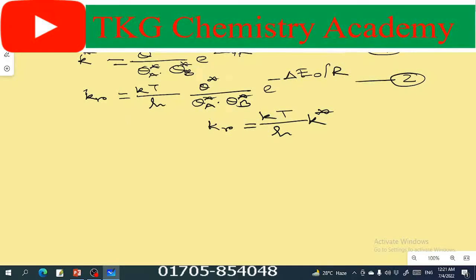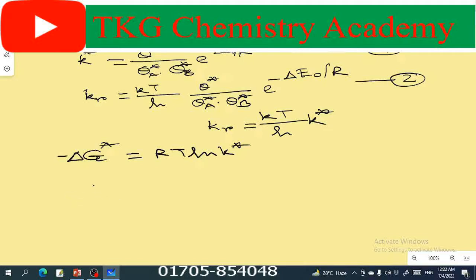Minus del G star equal to RT ln K. And del G star equal to del H star minus T del S.